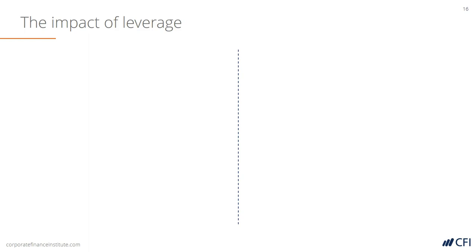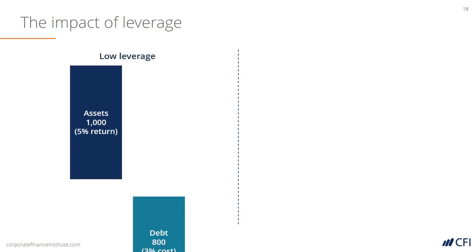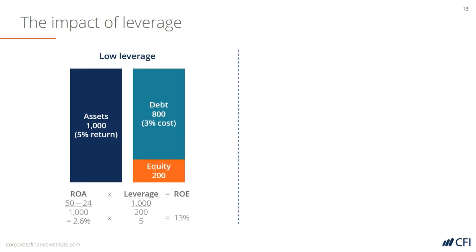Let's look at the impact of leverage in increasing return on equity. Here's an example of a relatively low-level financial institution. It generates a return on assets of 2.6%, has equity of 200 and debt of 800, resulting in a return on equity of 13% thanks to leverage improving the return on assets.